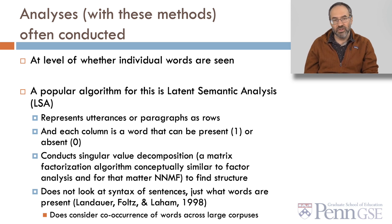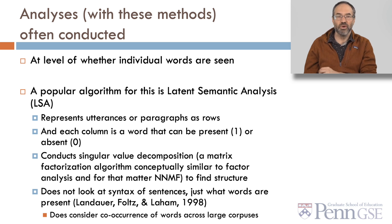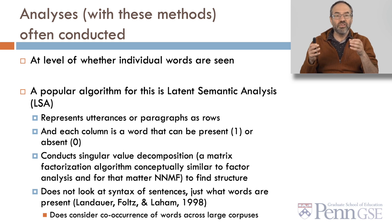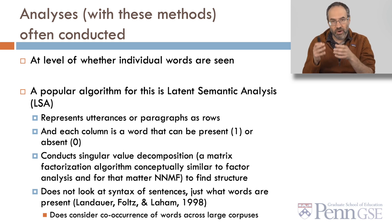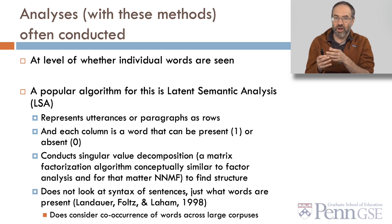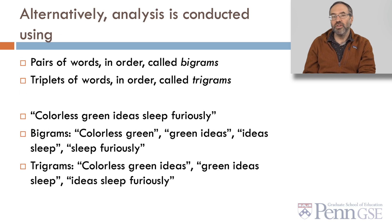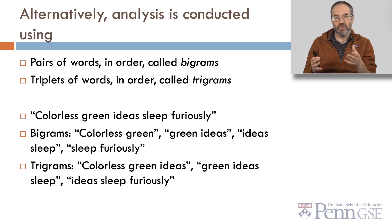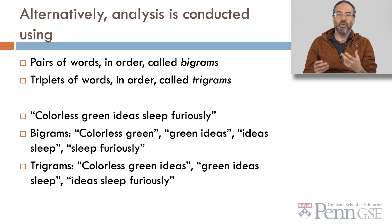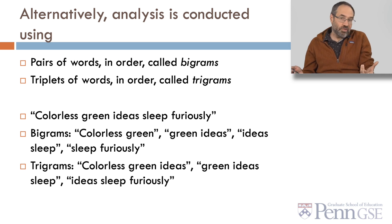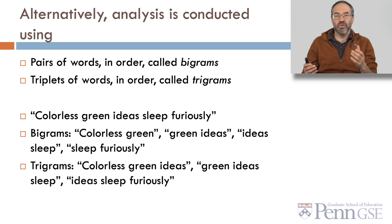LSA doesn't look at the syntax of sentences — it just looks at what words are present, although it does consider the co-occurrence of words across large corpora. Alternatively, analysis might be conducted using pairs of words in order, called bigrams, or triplets of words, called trigrams.